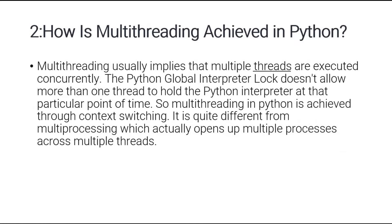Question number two: how is multi-threading achieved in Python? Multi-threading usually implies that multiple threads are executed concurrently, but Python's Global Interpreter Lock (GIL) doesn't allow more than one thread to hold the Python interpreter. For that we use context switching, and it is also quite different from multi-processing.